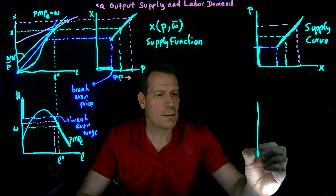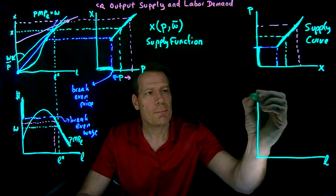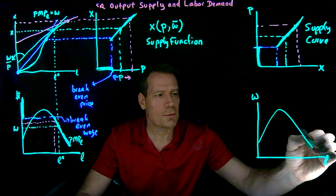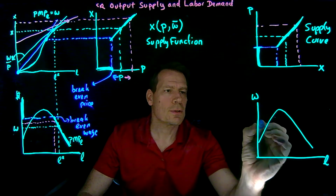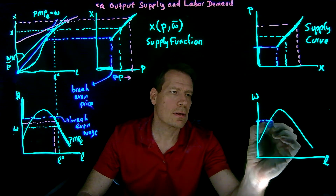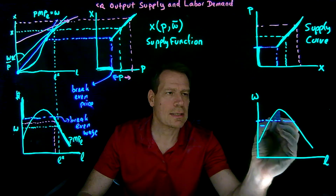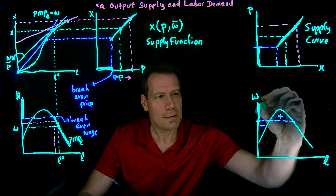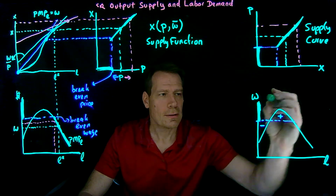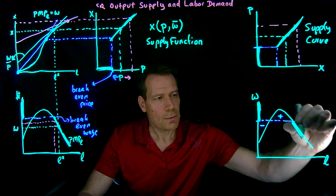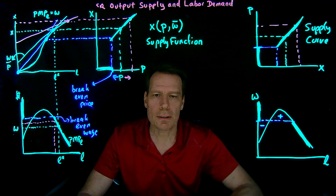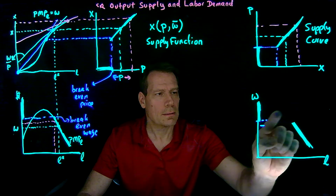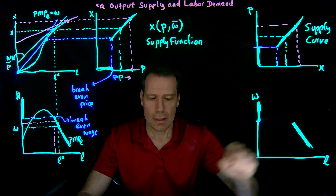So redrawing that over here, we have labor on the horizontal axis and we can now put the wage on the vertical axis. We have this marginal revenue product of labor curve, and the first thing we do is find the break-even wage — the wage that makes these losses exactly equal to these gains. Then we know everything above that wage will result in no workers being hired. But once we hit the break-even wage, we're going to hire workers along this marginal revenue product of labor curve. And we have our labor demand curve.